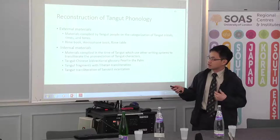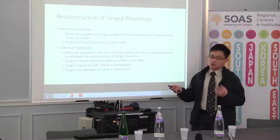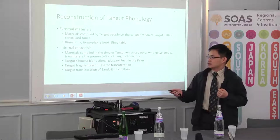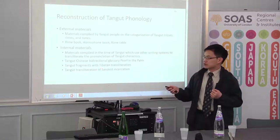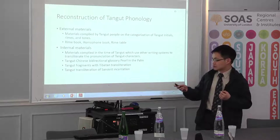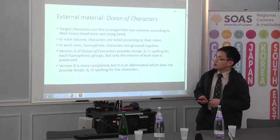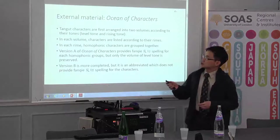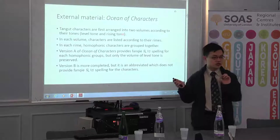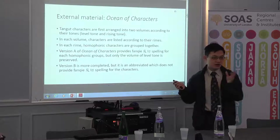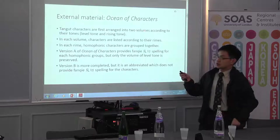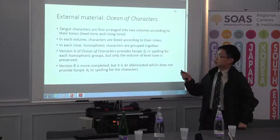There are three major kinds of internal materials: one is the very famous Pearl in the Palm, the second are the Tangut fragments with Tibetan transliteration, and the third are Tangut transliteration of Sanskrit incantation. Among the external materials, one of the most important is the Ocean of Characters. I don't like to use the Chinese name Wenhai because in fact there's no Chinese name for this book, so I just use the semantic translation.